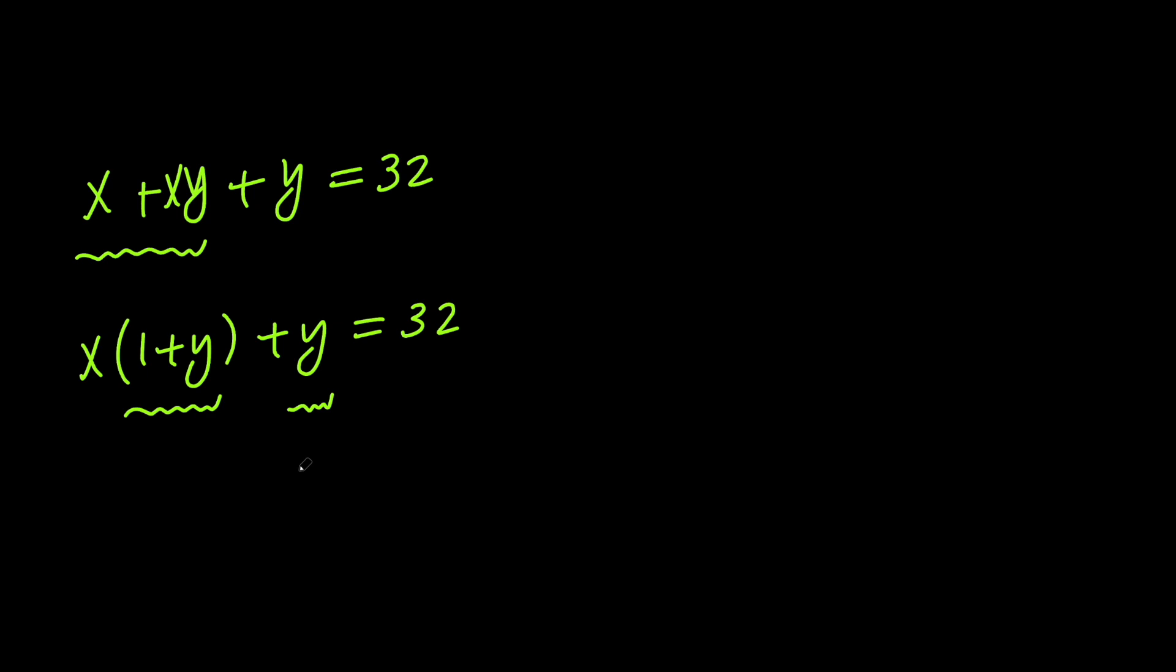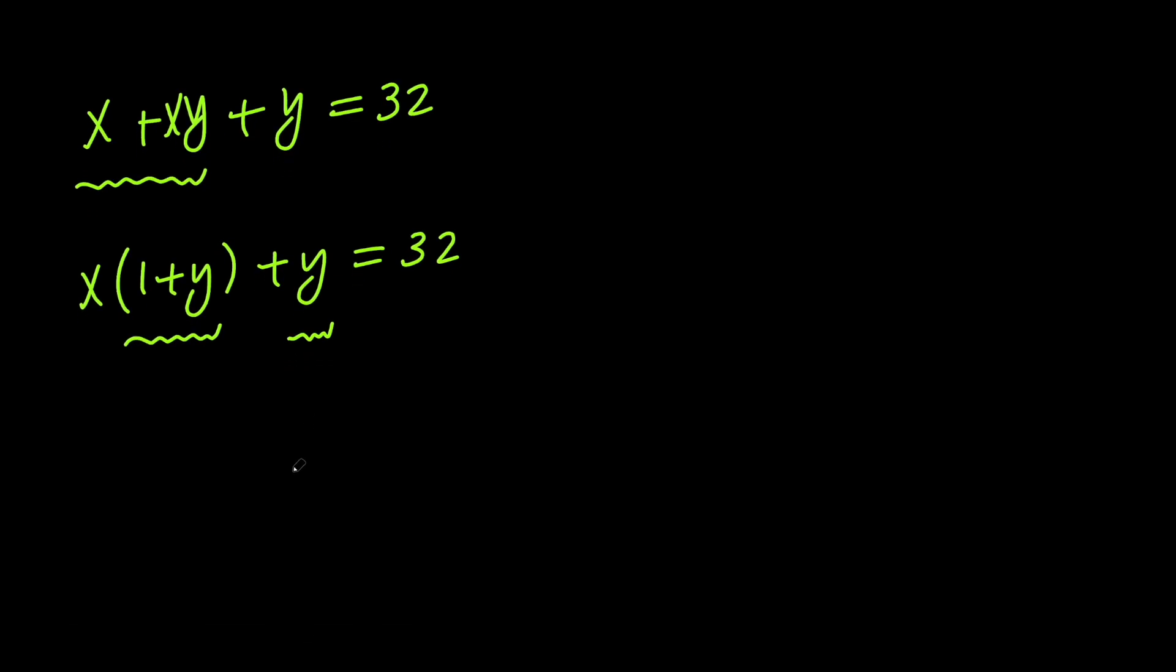So let's go ahead and do that. Let's go ahead and add 1 to both sides. So we get x times 1 plus y plus 1 plus y equals 33.